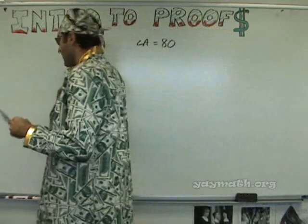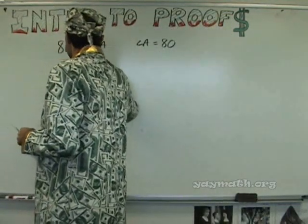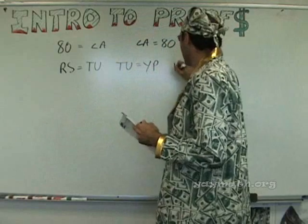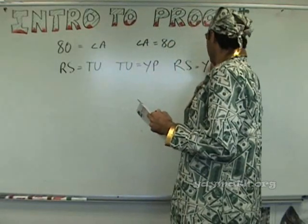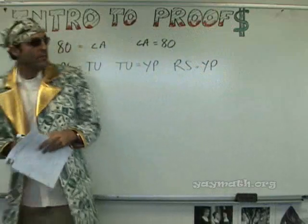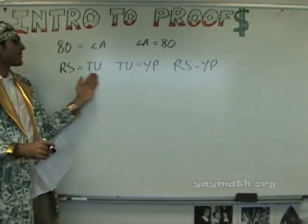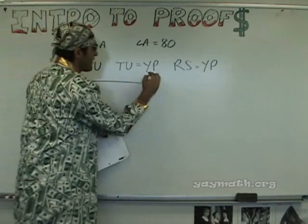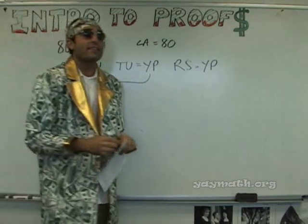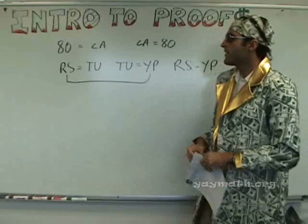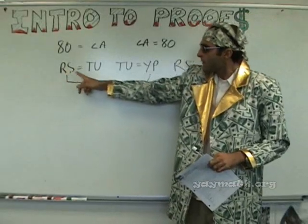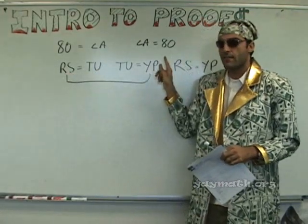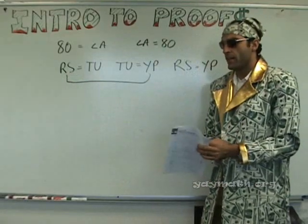Okay, the next one's very relevant — it's going to come up a lot. RS equals YP. RS equals TU, TU equals YP — so now we connect the beginning and the end. Transitive property! Right. Transitive property is when you start at the beginning, go to TU, TU connects to another, and then we connect beginning to end. So keep that in mind — it's going to come up again.